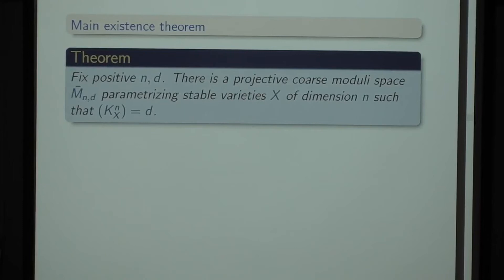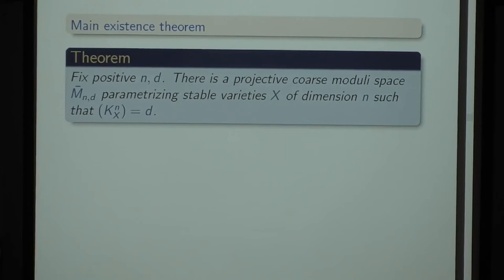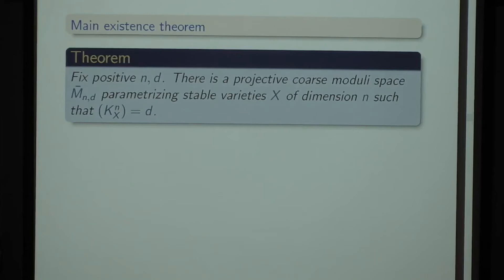Let's get back to the main existence theorem: if we fix the dimension and the volume D, there's a projective moduli space parametrizing stable varieties of dimension N where the self-intersection of the canonical class is exactly D. This is the characteristic-zero theorem. There are numerous problems in positive characteristics. I'd like to go through the main issues that go into this proof and its generalizations.